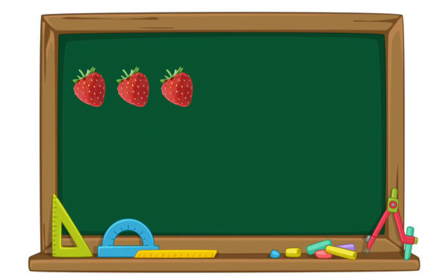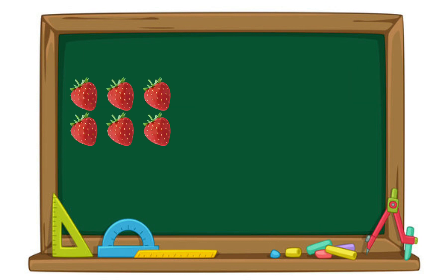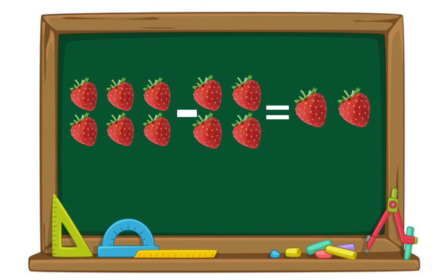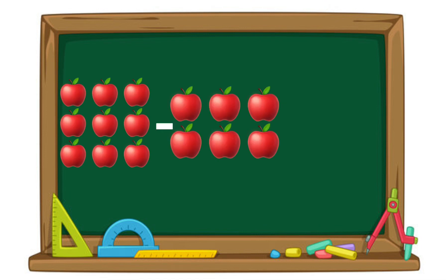3 strawberries minus 2 strawberries equals 1 strawberry. 6 strawberries minus 4 strawberries equals 2 strawberries. 9 apples minus 6 apples equals 3 apples.